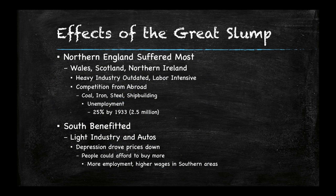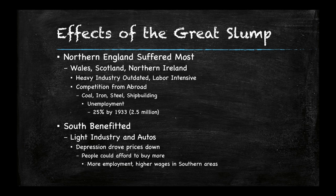The effects of the Great Slump: Northern England suffered the most, and this included Northern Ireland, Scotland, and Wales, partially because they were old industry. They were outdated, very labor-intensive, and could not stand competition from abroad in areas like coal, iron, and steel. Unemployment grew to about 25 percent, which was about 2.5 million people.